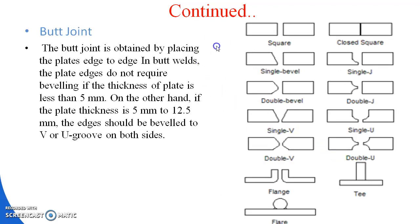After the lap joint, we have the butt joint. The butt joint is obtained by placing the plates edge to edge. The plate edges do not require beveling if the thickness is less than 5 mm. If the plate thickness is 5 mm to 12.5 mm, the edges should be beveled to a V-shape or U-groove on both sides. The shapes include: square, closed square, single bevel, single J, double bevel, double J, single V, single U, double V, double U, flange, and T.